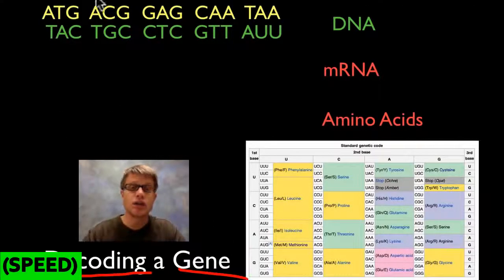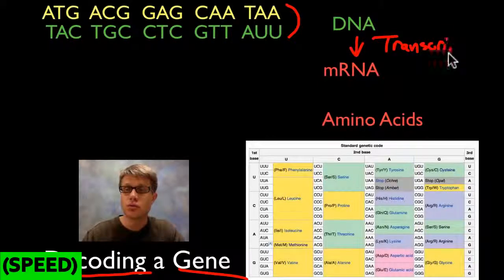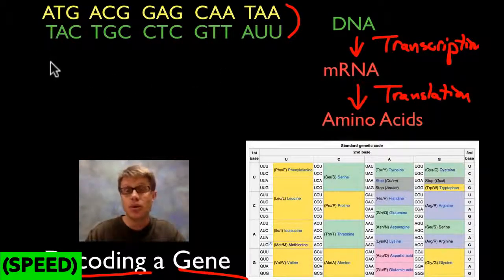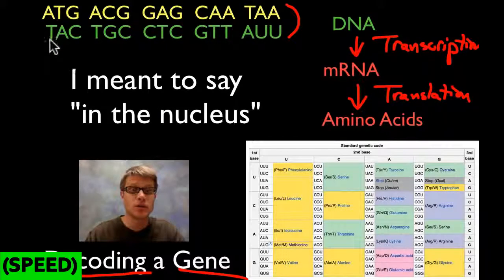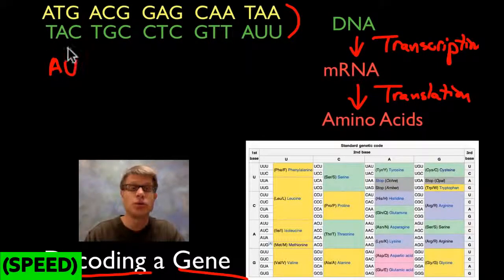Now let's decode a gene. We have a gene found within a stretch of DNA — a double helix with complementary strands. I'll perform transcription, going from DNA to messenger RNA. RNA polymerase looks at the DNA and puts down complementary RNA: T goes to A, A goes to U — remember, we only have uracil in messenger RNA — G goes to C, and C goes to G. Working through the sequence gives us codons in the messenger RNA.